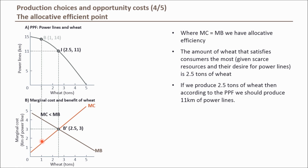In other words, the economy feels that the benefit it derives from an extra tonne of wheat is greater than the opportunity cost of the power lines it has to give up. Because this is a rational and logical economy, it decides to move productive resources away from producing power lines to producing more wheat. This choice is illustrated on the PPF by a rightward movement along the PPF towards point J, and this rightward movement will continue until production combination J is reached, where marginal cost equals marginal benefit.